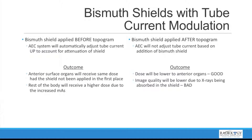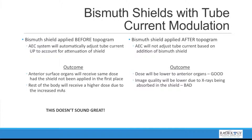If we're using bismuth shields and tube current modulation, there are two ways to apply the shield. If a bismuth shield is applied before the topogram, the automatic exposure control system will adjust the tube current to account for the shield seen in the topogram — meaning the tube current goes up to account for that extra attenuation. The outcome is that the anterior organs receive the same dose as if the shield had never been placed, while the rest of the body receives a higher dose because the mAs has been increased. This doesn't sound like a very good option.